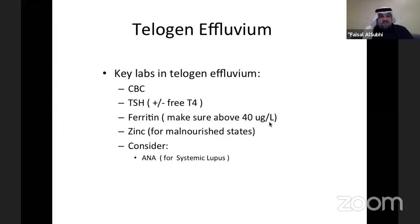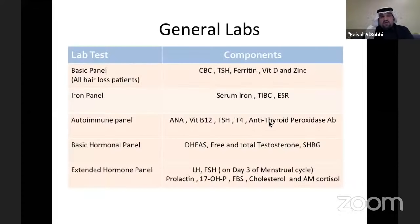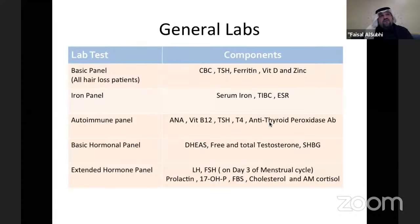Key labs for telogen effluvium patients: CBC, thyroid function, and ferritin level — which should always be above 40. Check zinc level as well, and consider ANA to rule out systemic lupus. As a diagnostic summary, all female hair loss patients need CBC, TSH, ferritin, vitamin D, and zinc. If ferritin is low, do an extended iron panel; if it doesn't respond to supplementation, consider celiac disease. Take iron with vitamin C such as orange juice to increase absorption. If autoimmune disease is suspected, do an autoimmune panel. Do hormonal panels on day three of the menstrual cycle.